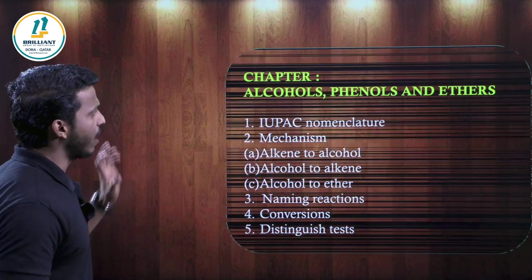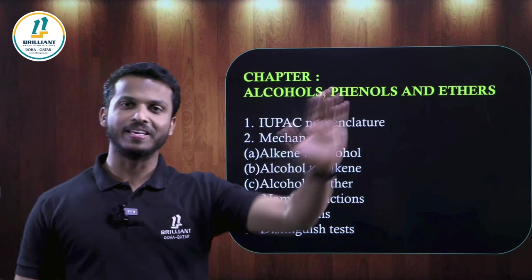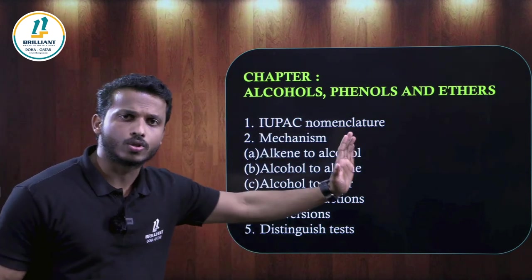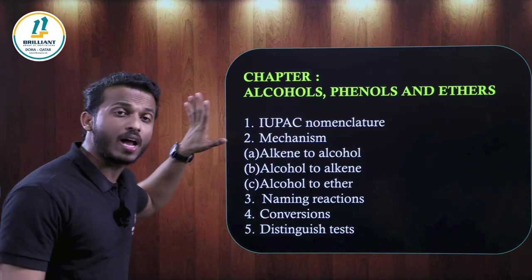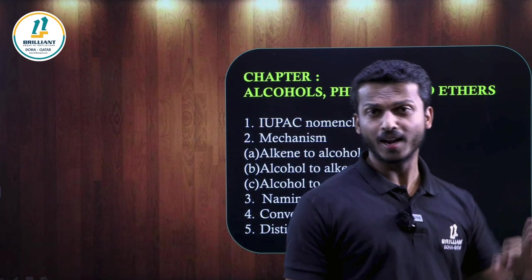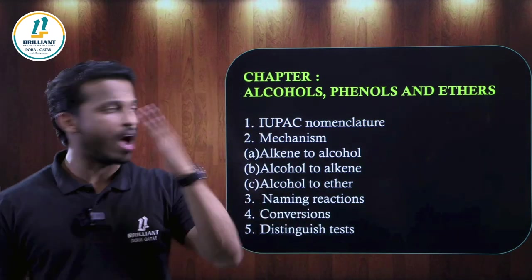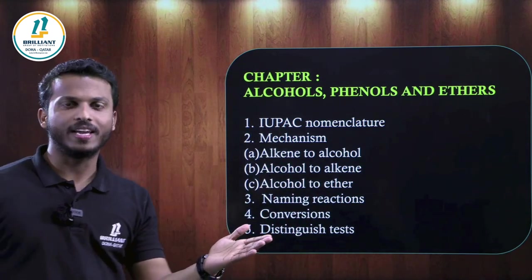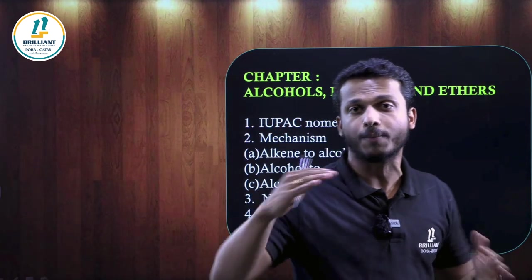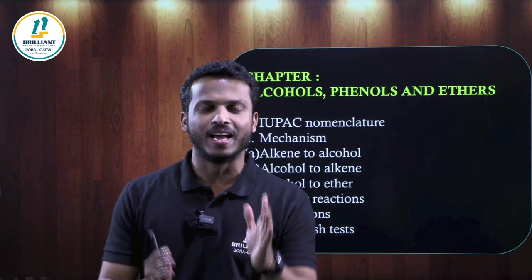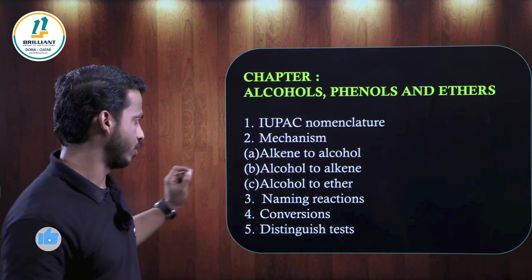One of the highest-weightage chapters in organic chemistry: Alcohols, Phenols, and Ethers. As in every organic chapter, IUPAC nomenclature is common. There are three mechanisms studied in this chapter: alkene to alcohol, alcohol to alkene, and alcohol to ether. Each mechanism involves steps — protonation, deprotonation, nucleophilic attack. Any one of these three mechanisms can be expected as a 2 to 3 mark question in the examination.